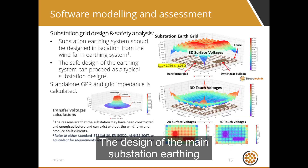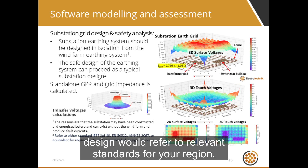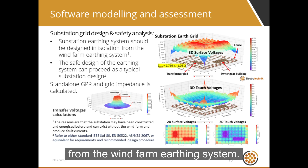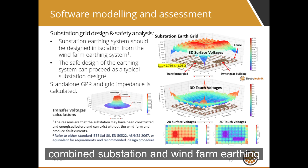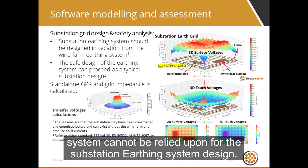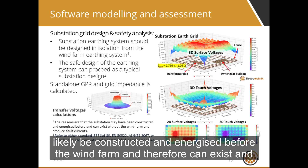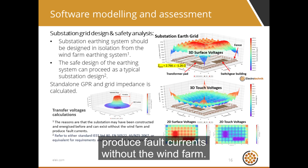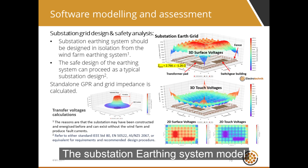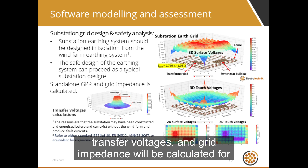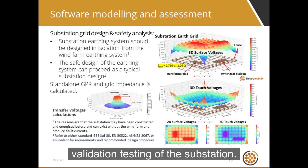The design of the main substation earthing system can proceed as a typical substation design would. Refer to relevant standards for your region for the substation earthing requirements. The substation earthing system should be designed in isolation from the wind farm earthing system — the benefit of the combined system cannot be relied upon, because the substation will most likely be constructed and energized before the wind farm and can produce fault currents without it. The substation earthing system model includes the meshes, steel reinforcement from the concrete slabs, and the fence. The stand-alone ground potential rise, transfer voltages, and grid impedance will be calculated for validation testing of the substation.